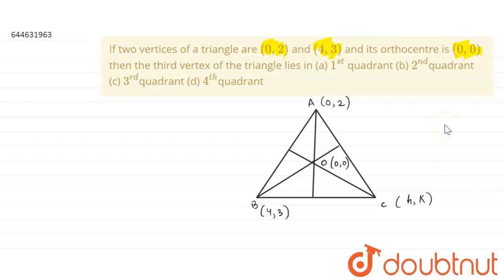Now, since all altitudes are perpendicular to their respective sides, line AB and line OC are perpendicular to each other. Therefore, the product of their slopes will be equal to minus 1. So: slope of AB × slope of OC = −1.